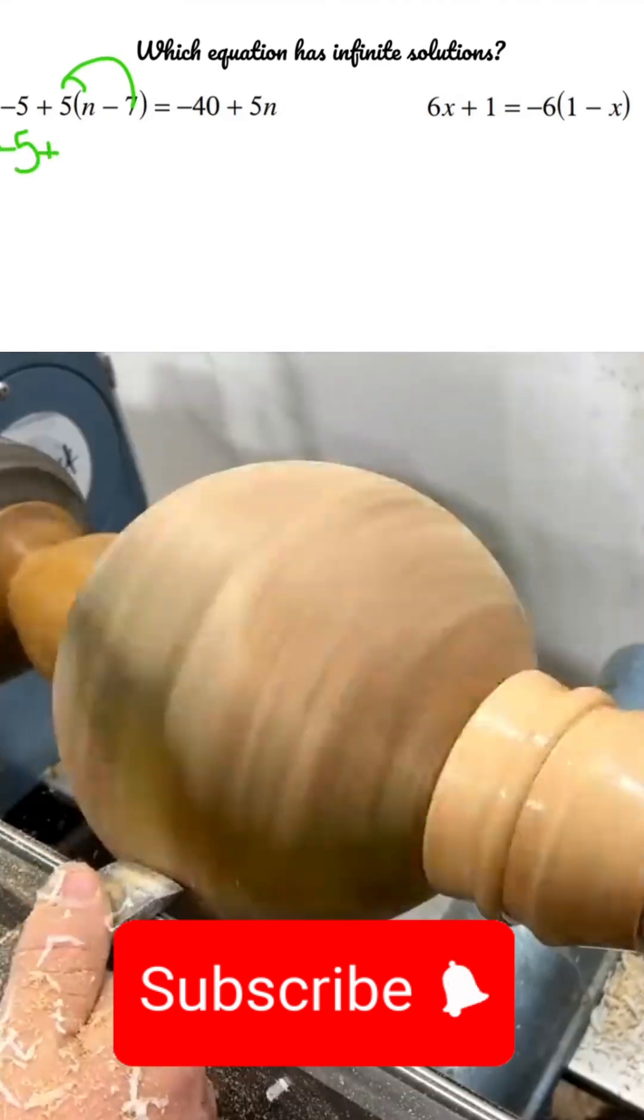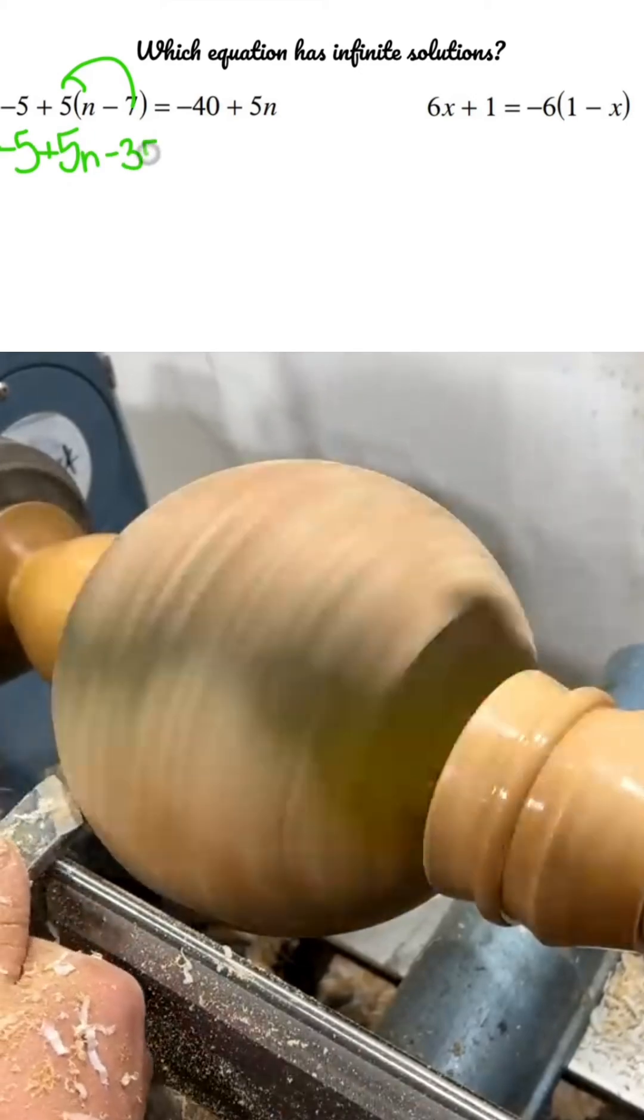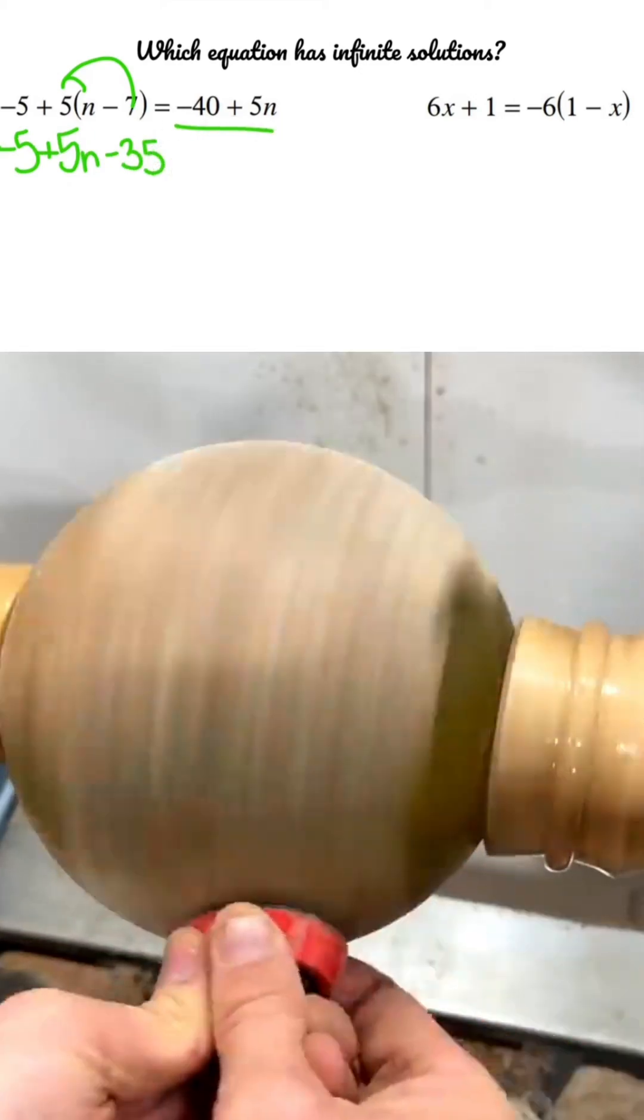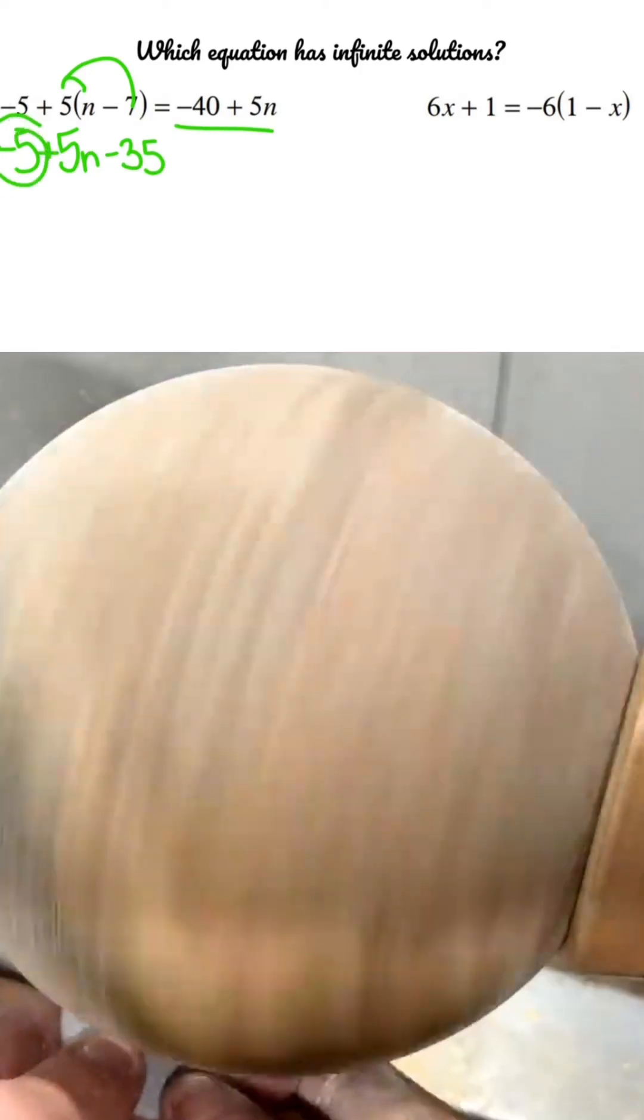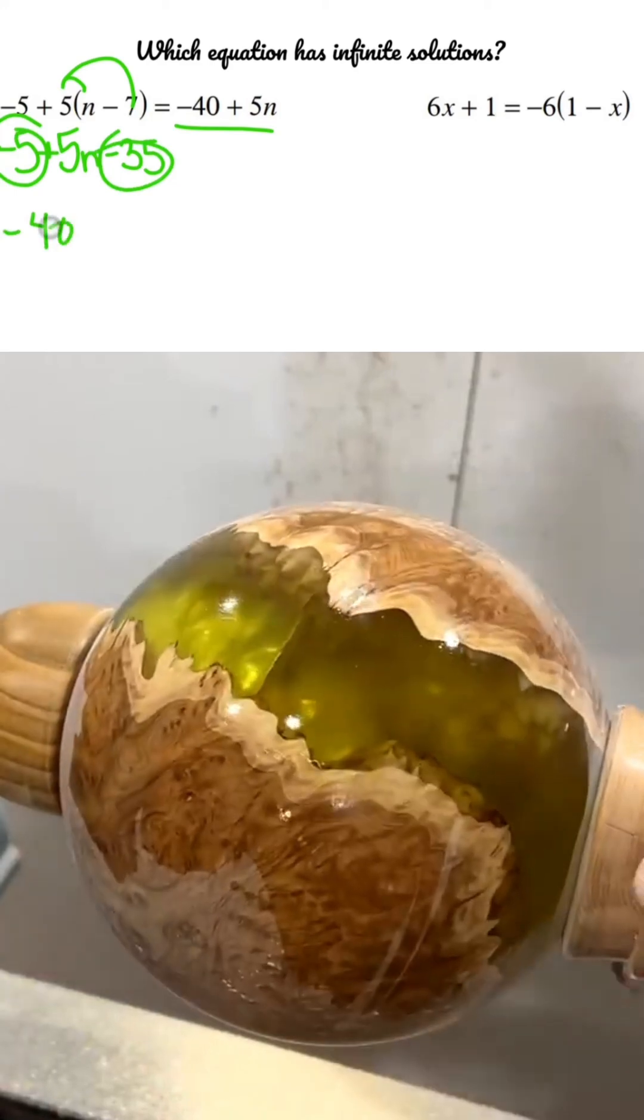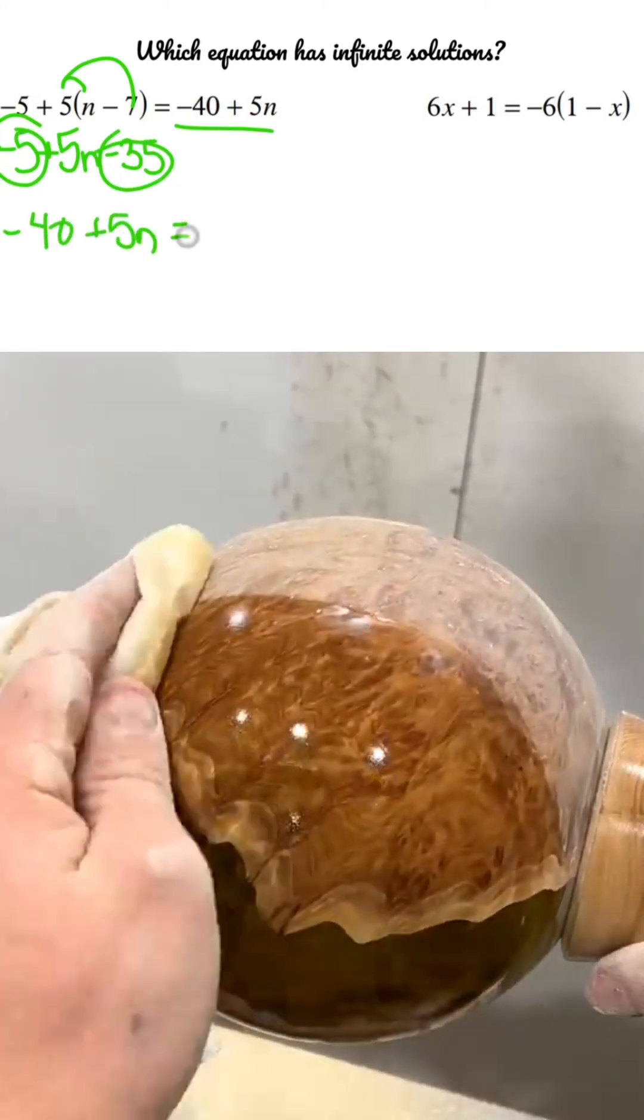5 times n is going to be positive, just getting 5n, and then 5 times negative 7 is negative 35. Now that is going to have to equal negative 40 plus 5n in order for it to be infinite. These guys combine and you do get negative 40 plus 5n. So this one is the infinite solution.